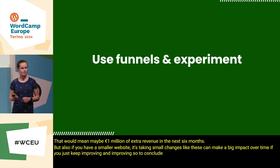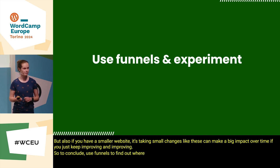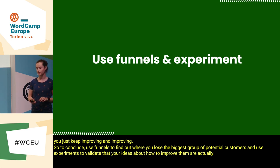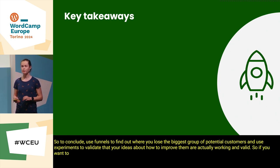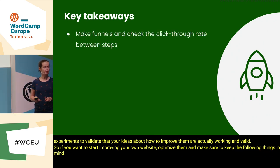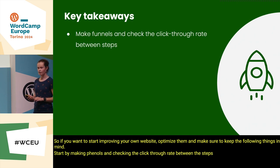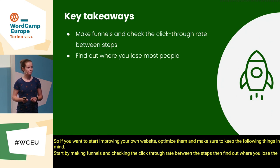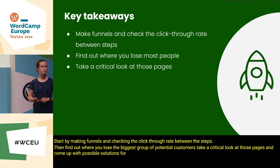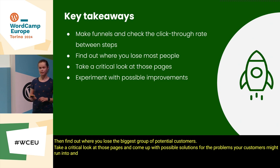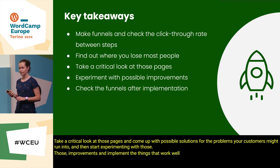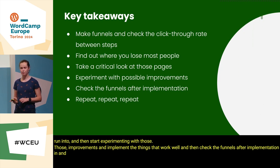So to conclude: use funnels to find out where you lose the biggest group of potential customers, and use experiments to validate that your ideas about how to improve them are actually working. If you want to start improving your own website, make sure to keep the following things in mind: start by making funnels and checking the click-through rate between steps, find out where you lose the biggest group of potential customers, take a critical look at those pages and come up with possible solutions, then start experimenting with those improvements and implement the things that work well, and then check the funnels after implementation and keep repeating this process over and over again.